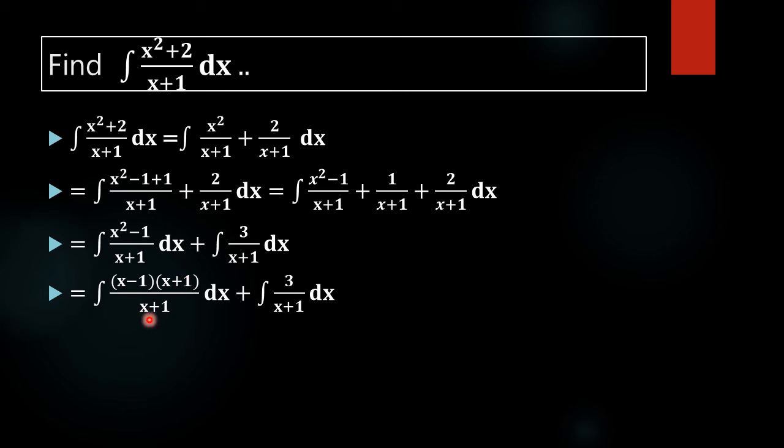Now, x plus 1 is common to both. We will cancel them. What will remain is integral of x minus 1 dx plus integral of 3 by x plus 1 dx.